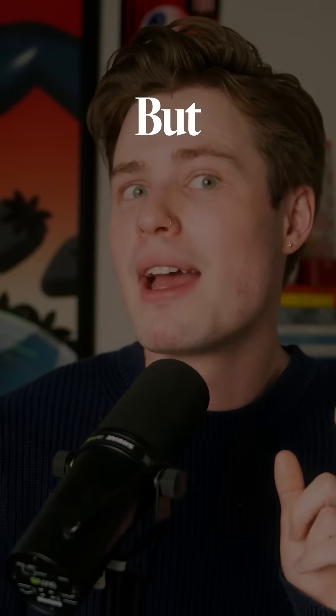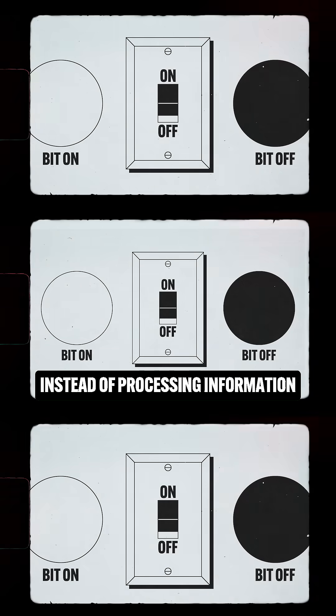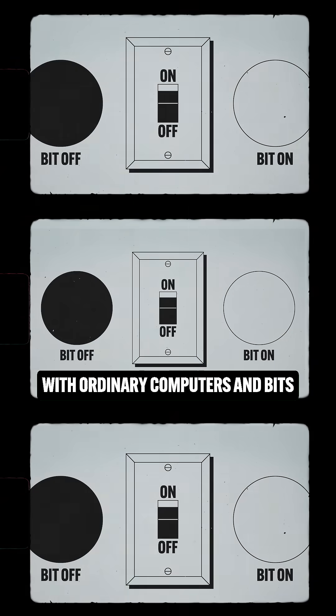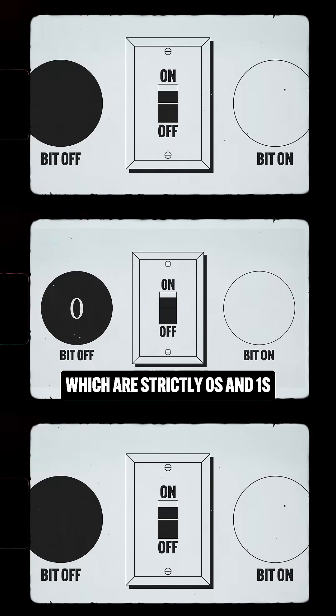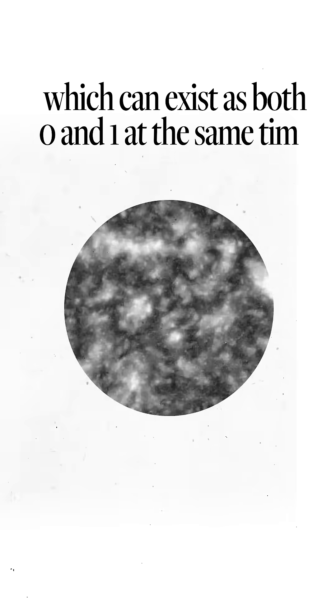Quantum computers are advancing fast, but how do they actually work? Instead of processing information with ordinary computers and bits, which are strictly zeros and ones, quantum computers use qubits, which can exist as both zero and one at the same time.